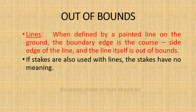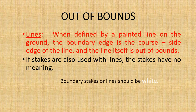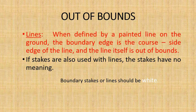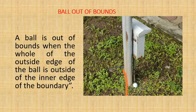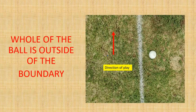When defined by a painted line on the ground, the boundary edge is the course-side edge of the line, and the line itself is out of bounds. If stakes are also used with lines, the stakes have no meaning. Boundary stakes or lines should be painted white. A ball is out of bounds when the whole of the ball is outside the inner edge of the boundary.